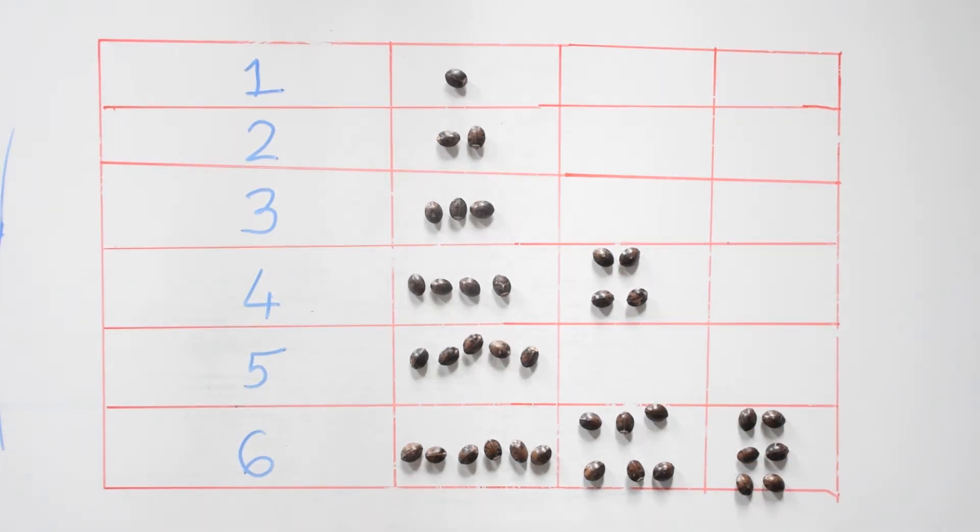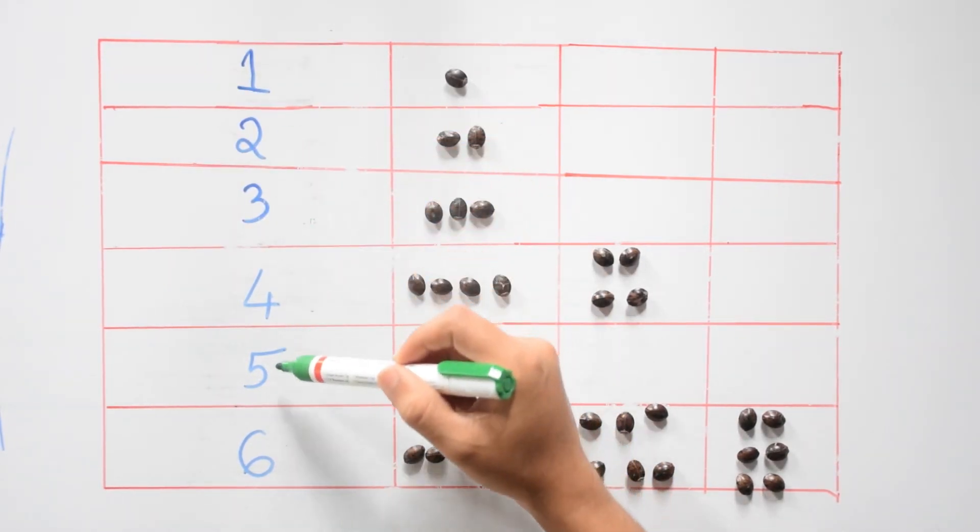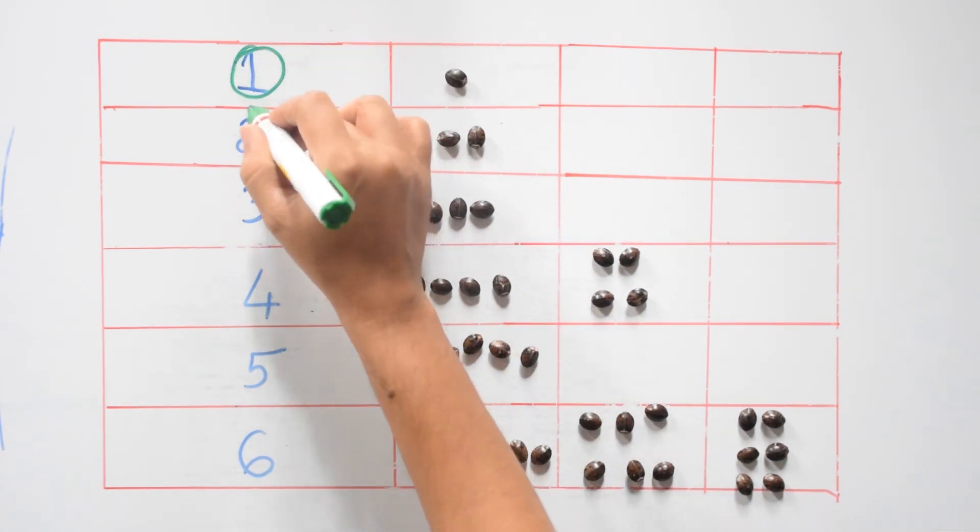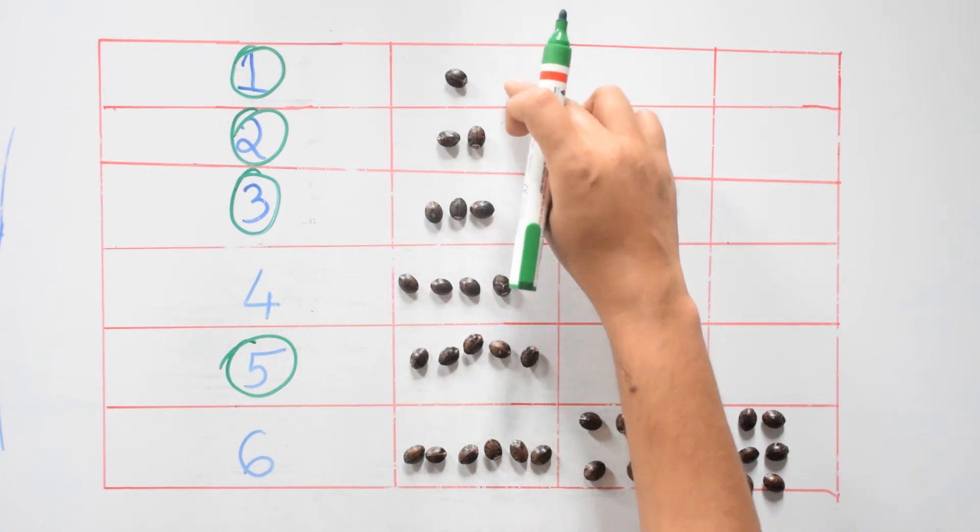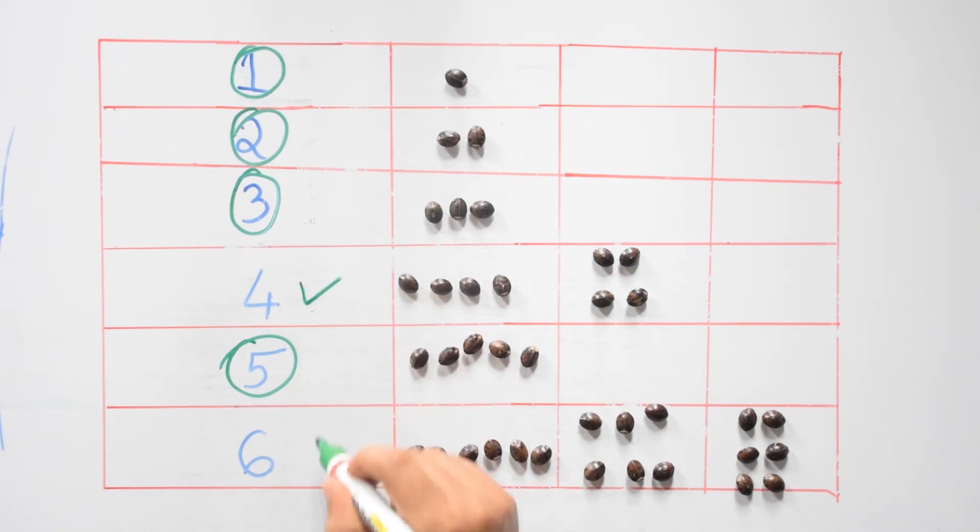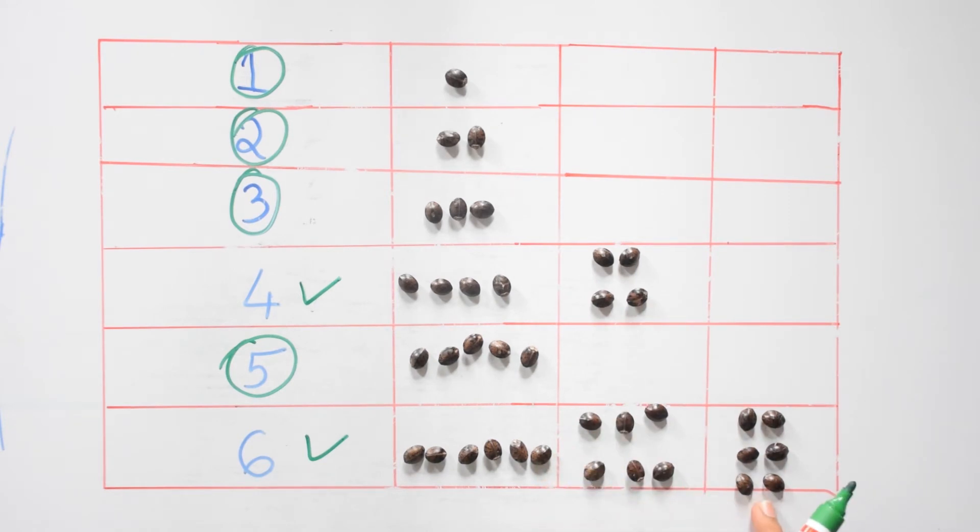Now what pattern do we see in this table? Pause the video and note down your observations. All the numbers 1, 2, 3, 4, 5, 6 can be put in one group. 1, 2, 3, and 5 can be put only in one group, but 4 and 6 can be put in more than one group.